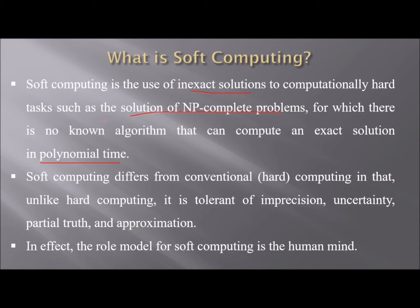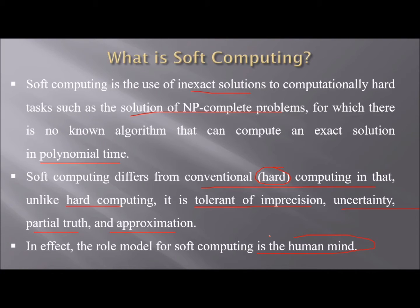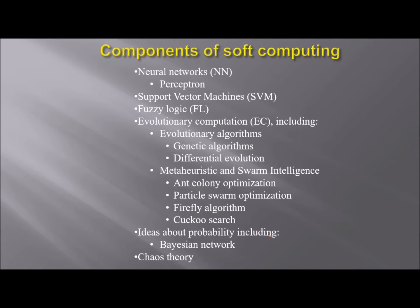Soft computing differs from conventional computing, that is hard computing. Unlike hard computing, soft computing is tolerant to imprecision. In fact, soft computing is how the human mind works — you can see, you can adapt, and you can decide. This is what soft computing is able to do.